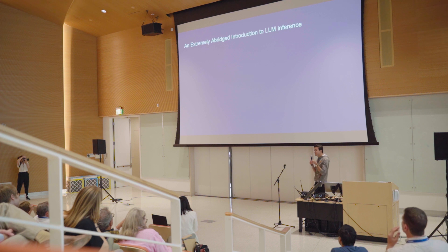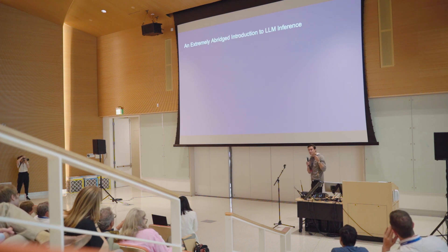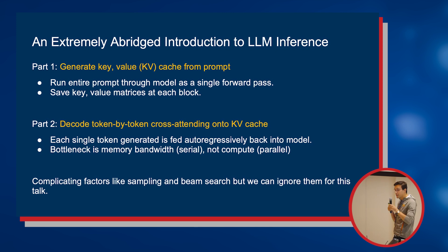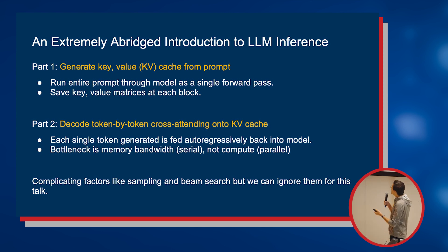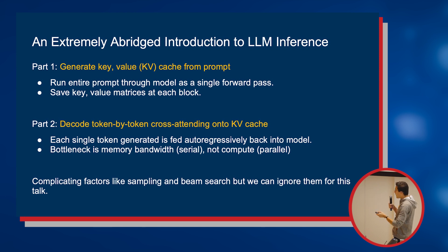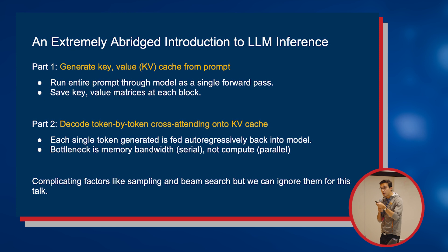Here's the extremely abridged introduction to how ChatGPT inference actually works. The first thing you do is run the model in parallel on the whole prompt, and this generates something called the KV cache. This can all be done totally in parallel. The second part is that you actually generate the output — what the model wants to say — but this has to be done in serial.